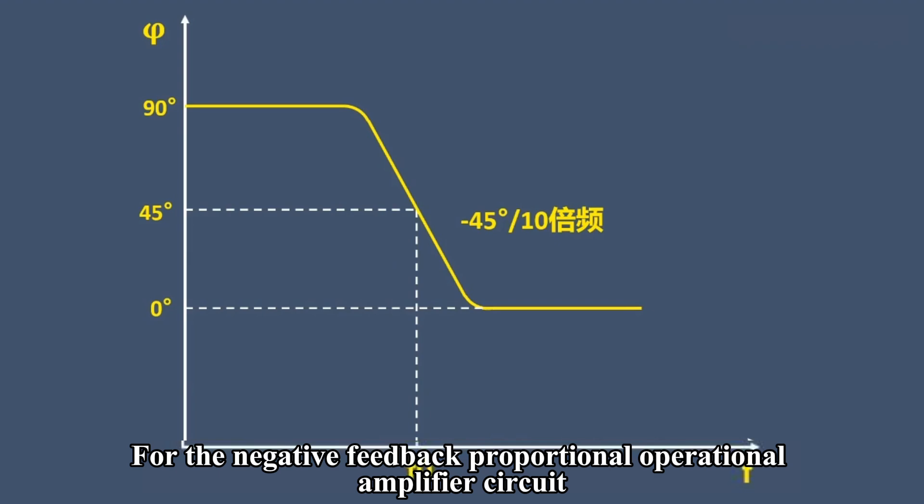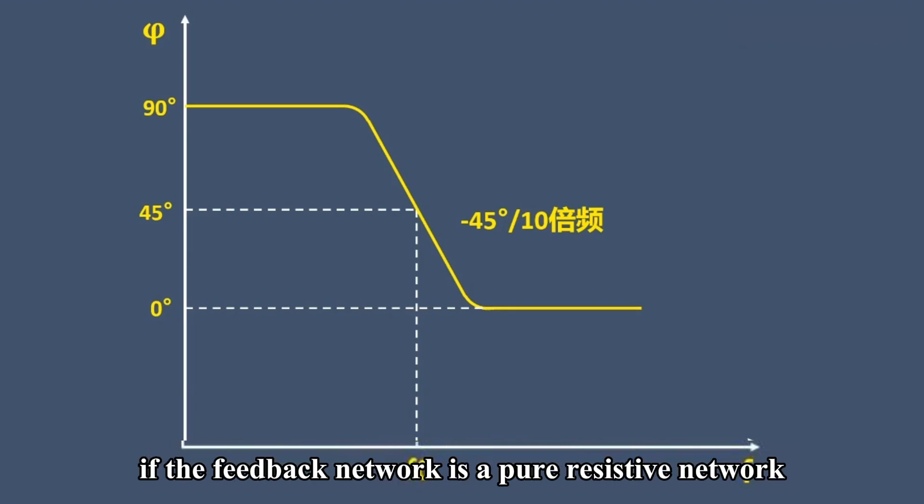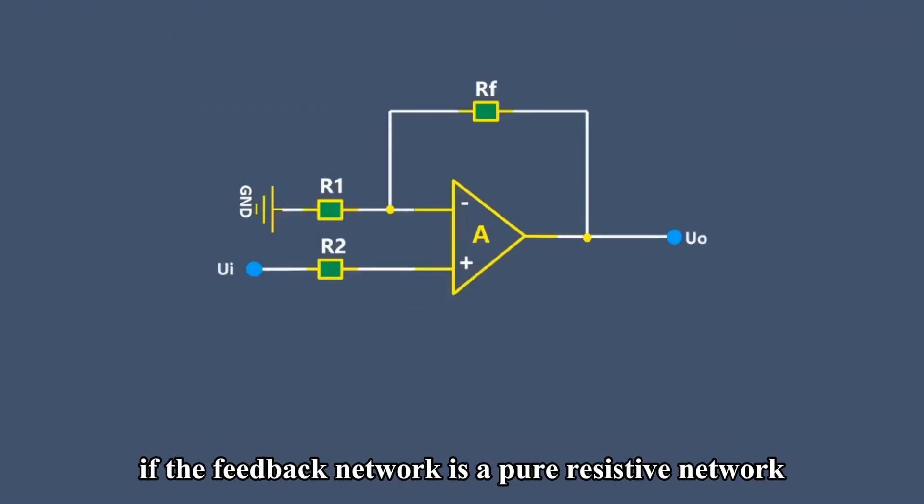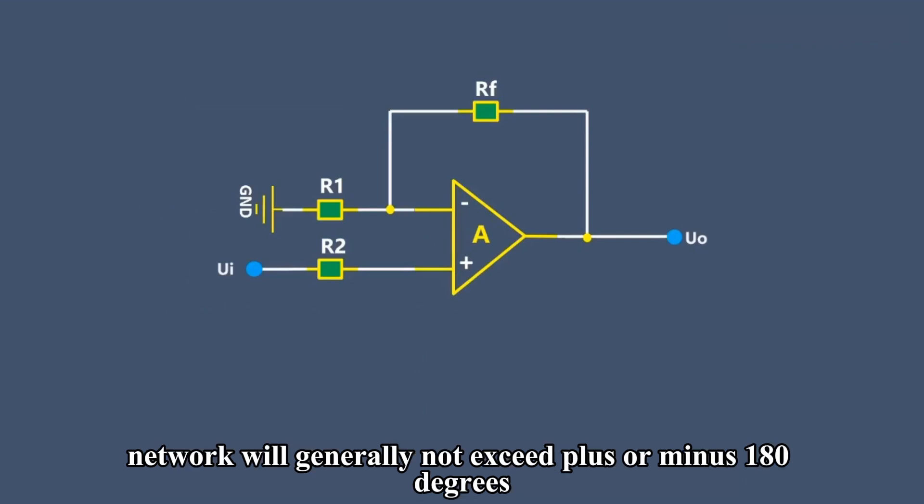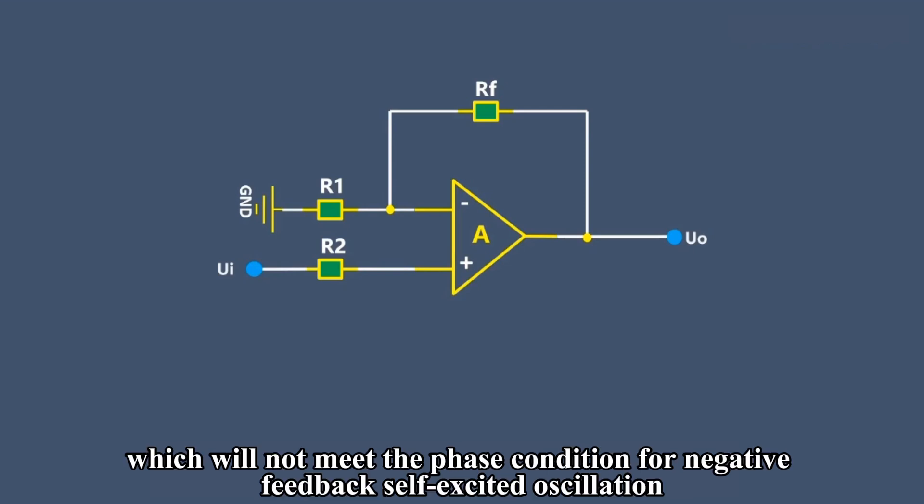For the negative feedback proportional operational amplifier circuit, if the feedback network is a pure resistive network, the phase difference between the amplifier and the feedback network will generally not exceed ±180 degrees, which will not meet the phase condition for negative feedback self-excited oscillation.